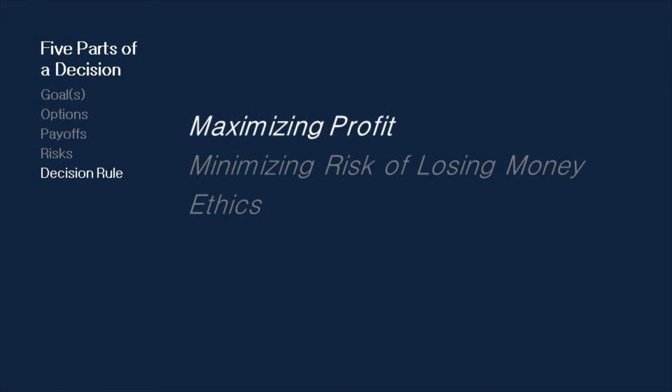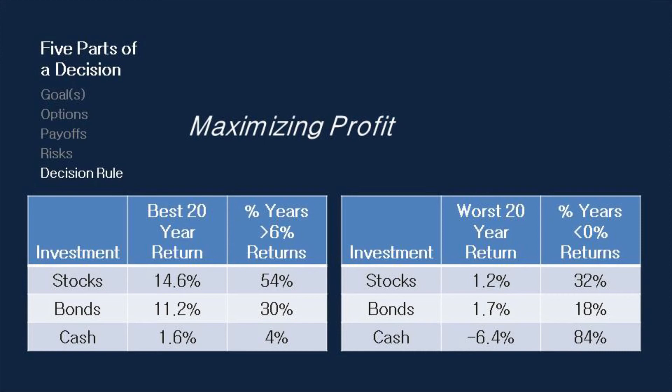If we look at our two tables, we see that stocks clearly have the highest upside for maximizing profit. They have the best 20-year return on record and the most frequent number of years in which returns exceed 6%. And there you have it — the five parts of a decision.